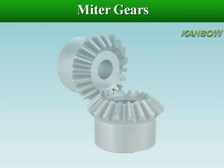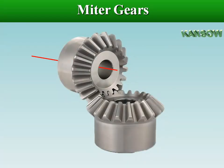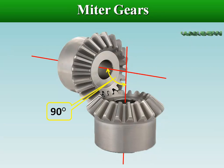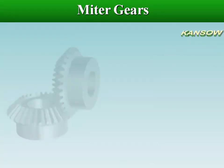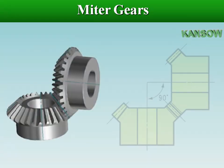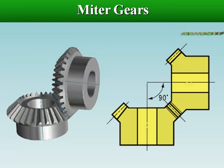Zerol bevel gears are manufactured on the same machines as spiral bevel gears. Bevel gears with shafts at 90 degrees to each other and with the same number of teeth — a 1 to 1 gear ratio — are called miter gears.